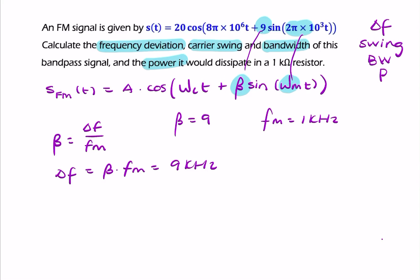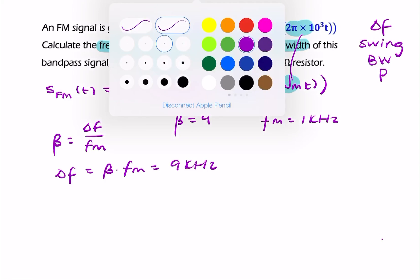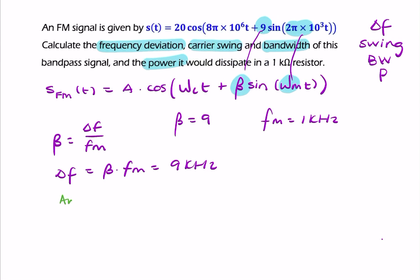Another way could have been to find the instantaneous frequency by taking that angle and finding the derivative. So the instantaneous frequency would be 8π × 10^6 over 2π. I'm taking the derivative and dividing by 2π.